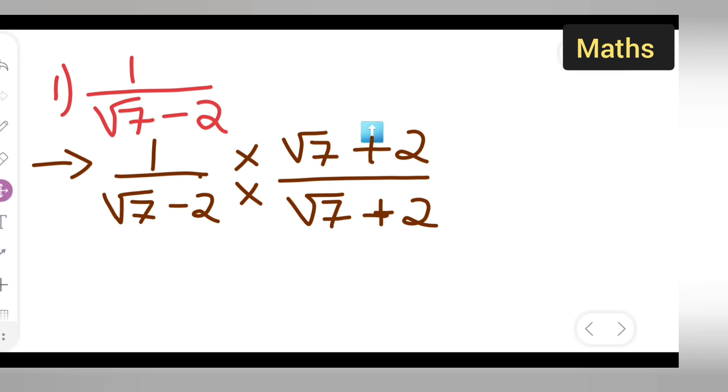What I have done here is if there is minus, you will have to multiply both numerator and denominator by this denominator only, but you will have to put a plus sign. The sign will change so that your denominator should be negative. Minus and plus gives minus.